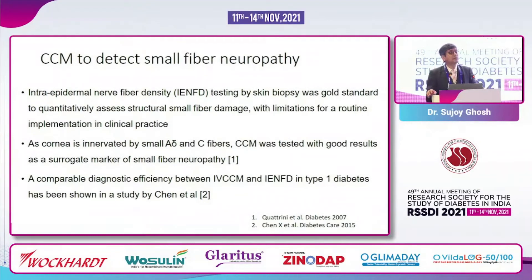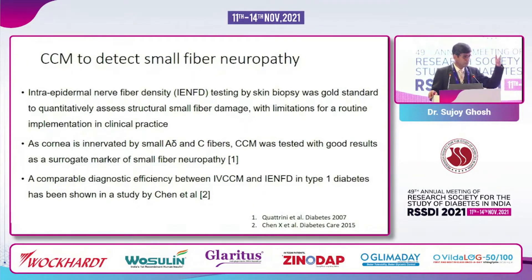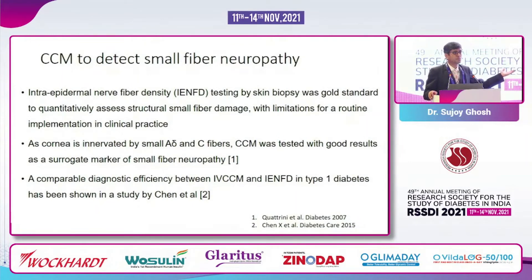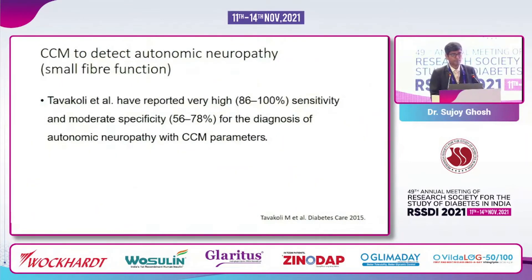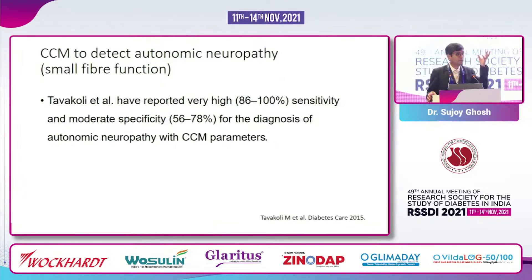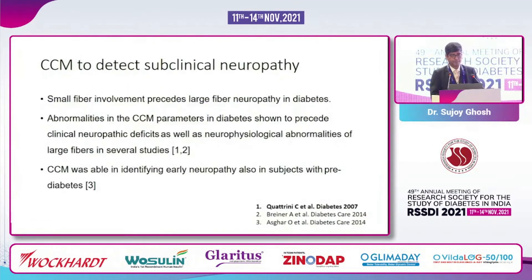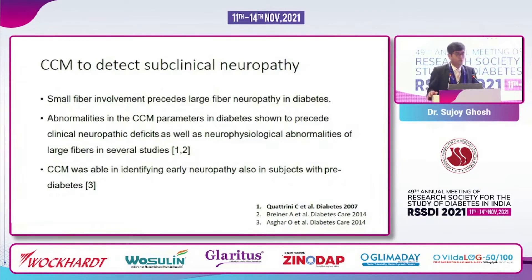They then compared skin biopsy findings with corneal confocal microscopy findings and showed the results were identical — validating CCM against the previous gold standard. They also showed that whatever small fiber abnormality you pick up on the cornea corroborates with autonomic dysfunction as well. And like I said, this probably precedes clinical neuropathy.